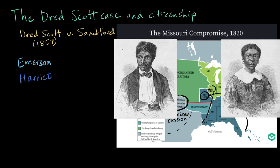After a year or so, Emerson moved to Louisiana and married a woman named Eliza Sanford, and ordered Dred and Harriet to join them. They took a steamboat down to Louisiana, and while they were on that steamboat, Harriet gave birth to a baby girl who was lawfully free since she had been born in free territory. But the Emersons continued to enslave all three of them. Eventually, Dr. Emerson died, and his wife Eliza Sanford became the sole owner of the Scott family, who had moved back to Missouri with her.